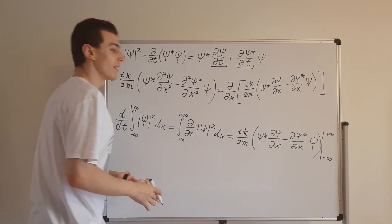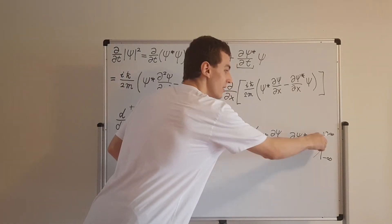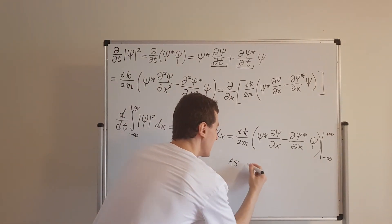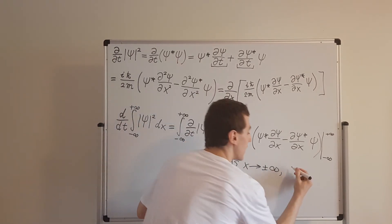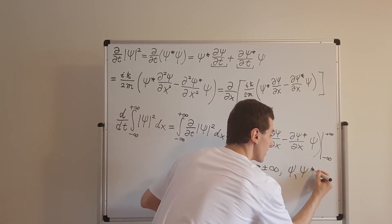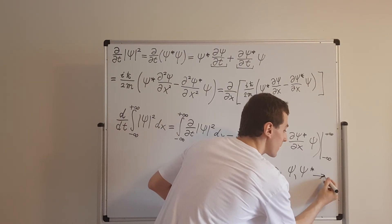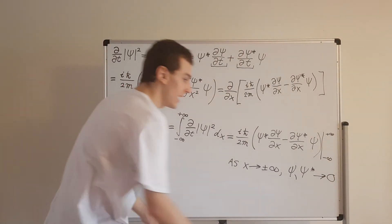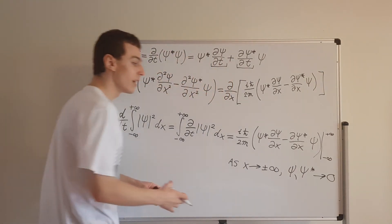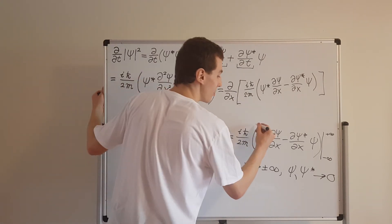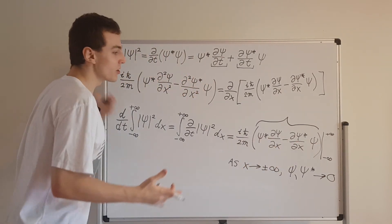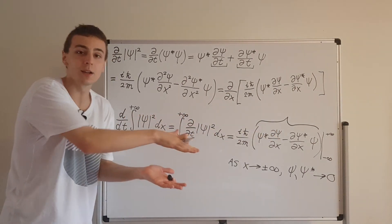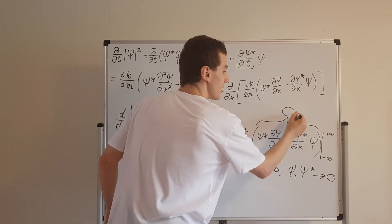You might wonder: how can we evaluate these at minus and plus infinity? The normalization condition tells us that as x goes to plus or minus infinity, both psi and psi star go to zero — either on a finite interval or asymptotically approaching zero. This is a property of a normalized wave function. So if it's normalized at the beginning, these terms are zero because psi, psi star, and their partial derivatives with respect to x all go to zero at infinity.